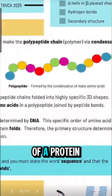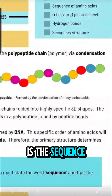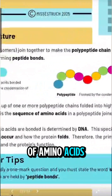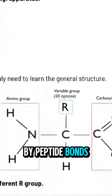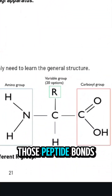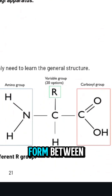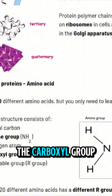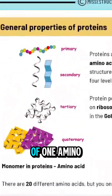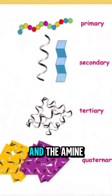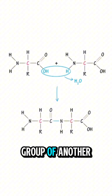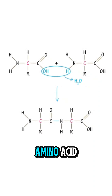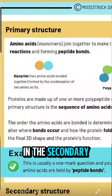The primary structure of a protein is the sequence of amino acids held in place by peptide bonds. Those peptide bonds form between the carboxyl group of one amino acid and the amine group of another amino acid.